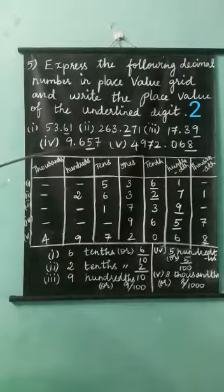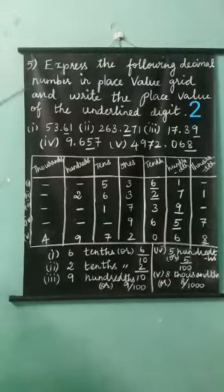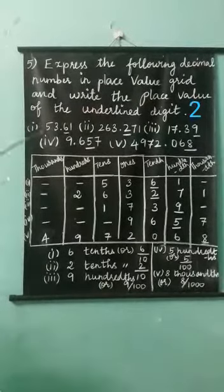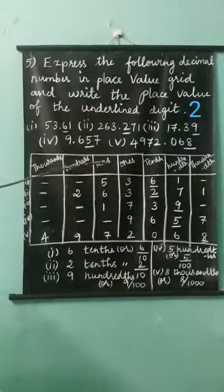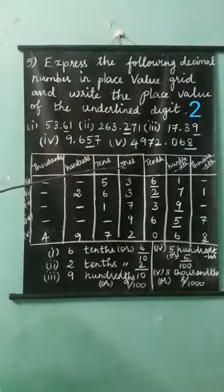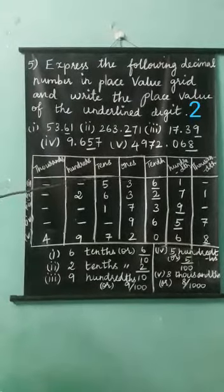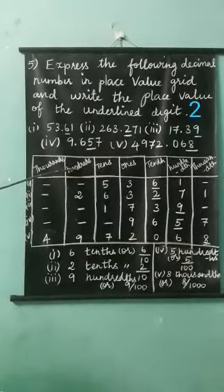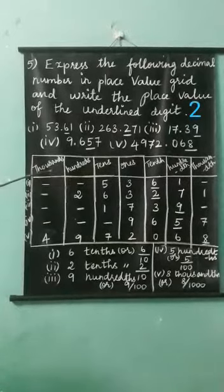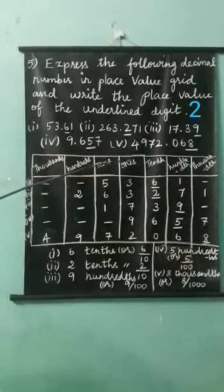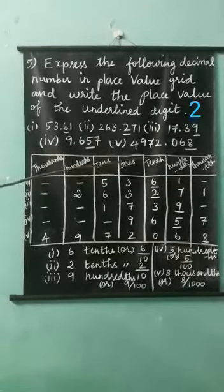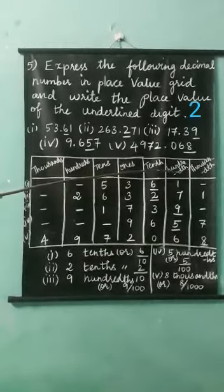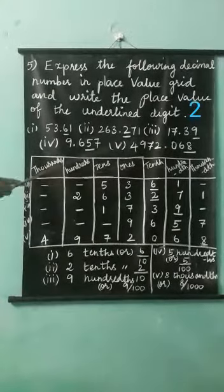See the underlined digits. First, you write the place value grid and write the place value of the grid. Ones, tens — this is the whole number's place value — ones, tens, hundreds, and thousands. Here, the decimal number's place value: tenth, hundredth, thousandth.